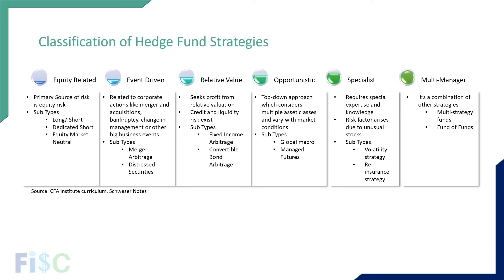The fourth classification is opportunistic strategies. It focuses not on individual security value but on major macroeconomic policies and economic conditions, assessing what is going to happen in a particular market and taking positions accordingly. For example, COVID-19 could be considered an opportunity to short at a certain time and then go long when the market recovers. The two subtypes taught in the curriculum are global macro and managed futures.